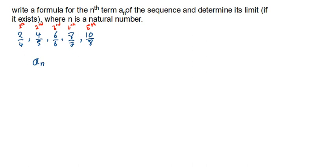What you observe is that each term is 2 greater than its initial position. On position 1, it's 2; on position 2, it's 4. So we are moving in terms of even numbers. Instead of having 1 on the first term, we have 2; instead of having 2 on the second term, we have 4; instead of 3 on the third term, we have 6, and the pattern keeps on going. So it basically means the numerator is 2 multiplied by n. If we pick the fifth term where n equals 5, that gives us 10 — that's where the 10 is coming from.